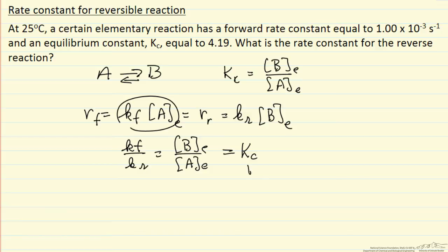We're given the value for the equilibrium constant and the forward rate constant, so we can solve for the reverse rate constant as the forward rate constant over the equilibrium constant.